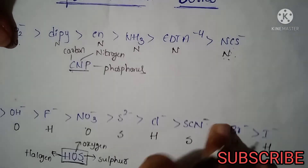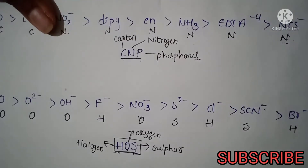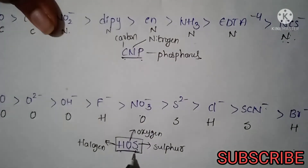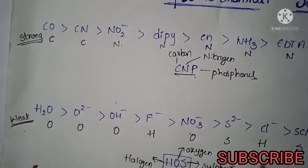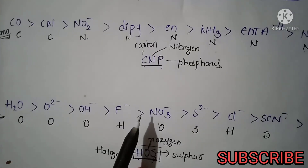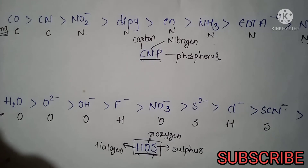So this trick uses the mnemonic CNP for strong field ligands and HOS for weak field ligands — easy to remember. Friends, this is all about the strong field and weak field ligands. If you liked this video, please like, share, and subscribe to the channel for more videos. Thank you, thanks a lot for watching the video.